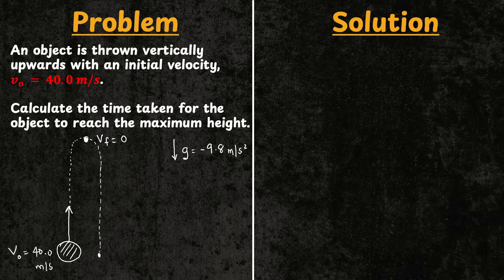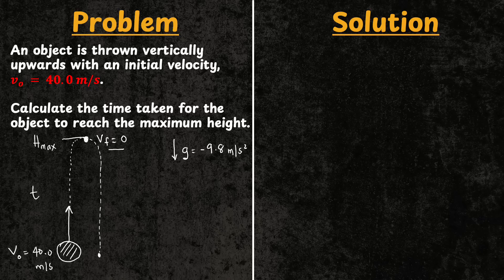So again, the object is given an initial speed. As it travels a vertical height to the maximum height — which we call H_max — it slows down until it reaches that maximum height. At that point, the velocity is zero. We are interested in finding the time it took the object to reach maximum height, which we call T_max.